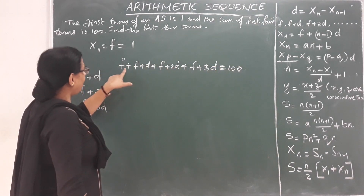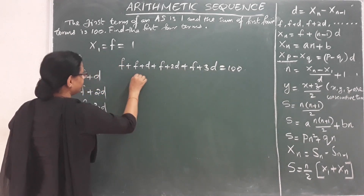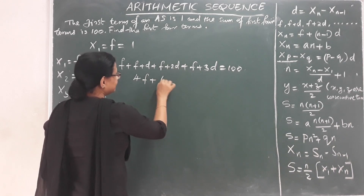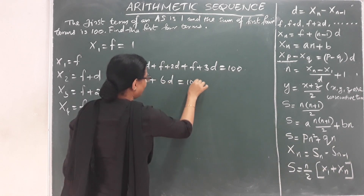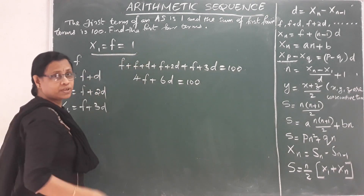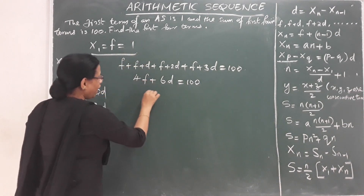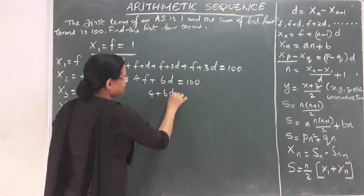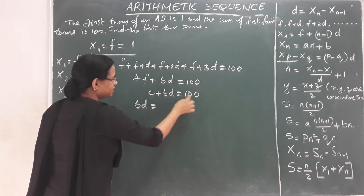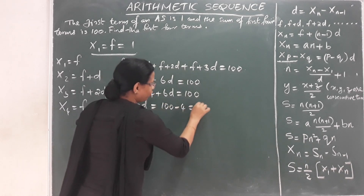Collecting terms: 4f plus 6d equals 100. Since the first term f equals 1, substituting gives 4 plus 6d equals 100. Therefore 6d equals 100 minus 4, which equals 96.